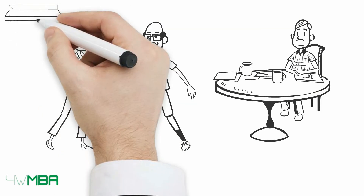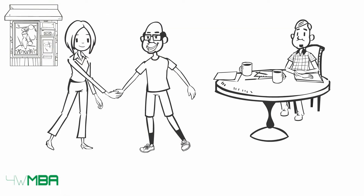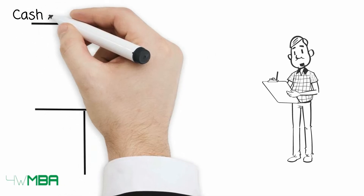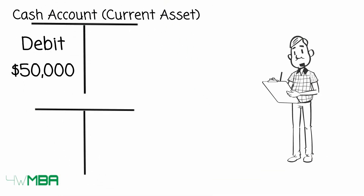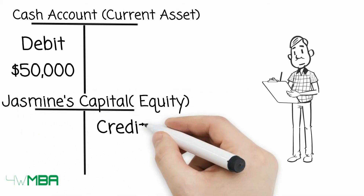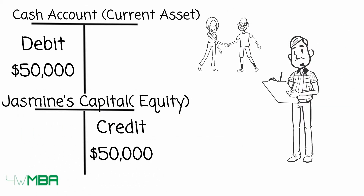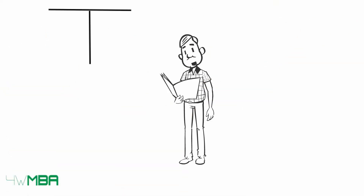After a while, Jim accepts a new partner, Jasmine. Jasmine puts in $50,000 and becomes an equity partner. Let's see how to record the transaction on the company balance sheet. We will debit the cash account due to the cash inflow, then create an account for Jasmine's capital and credit it. Eventually there will be two partners: Jim and Jasmine.